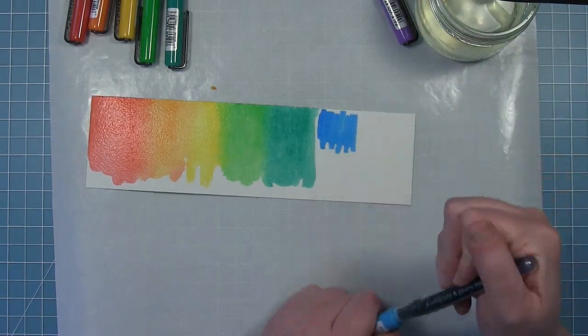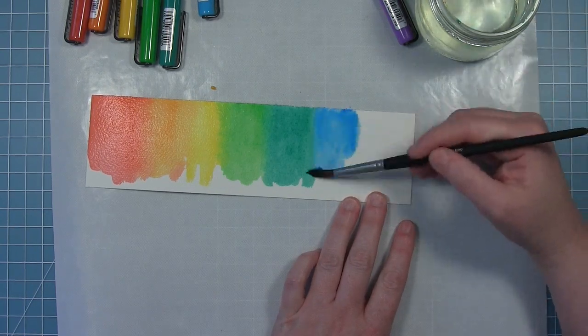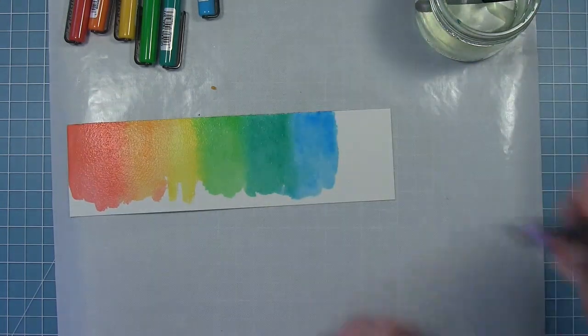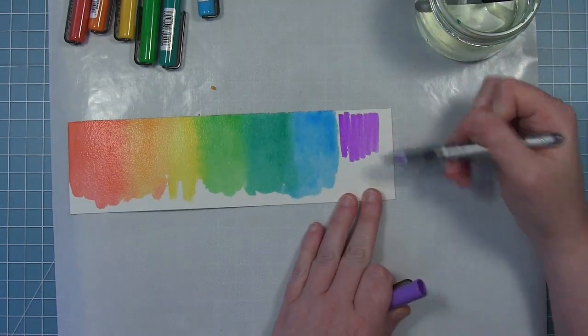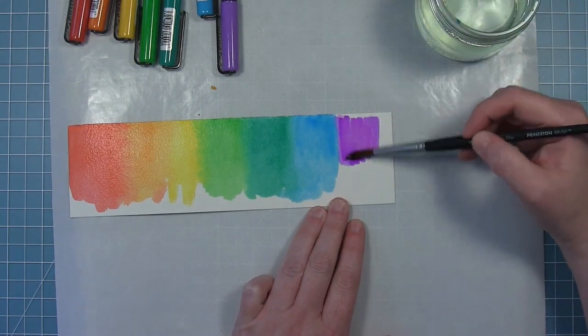Next I have sky blue. And then finally I have pale violet. Now the pale violet is not going to blend as well as the rest did, I noticed.